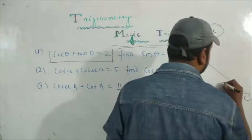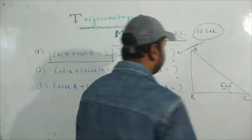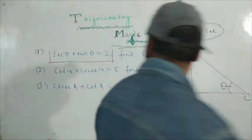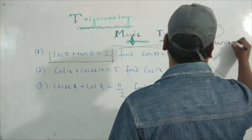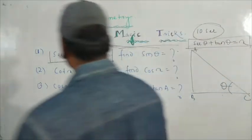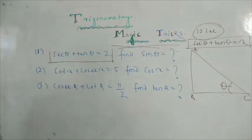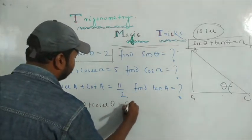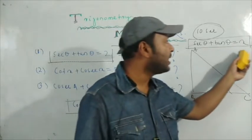Take angle theta in the triangle. If sin θ + tan θ is equal to x, then apply this trick. For the first question: sin θ + tan θ = x. For the second question: cos θ + cosec θ = x. For the third question: some other combination equals x.